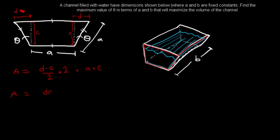The volume equals the cross-sectional area multiplied by the channel length, which is the constant B. So the volume V is equal to B multiplied by (DC + AC). This is the equation we'll be optimizing. We need to get it in terms of theta so we can take the derivative, set it to zero, and find the maximum.